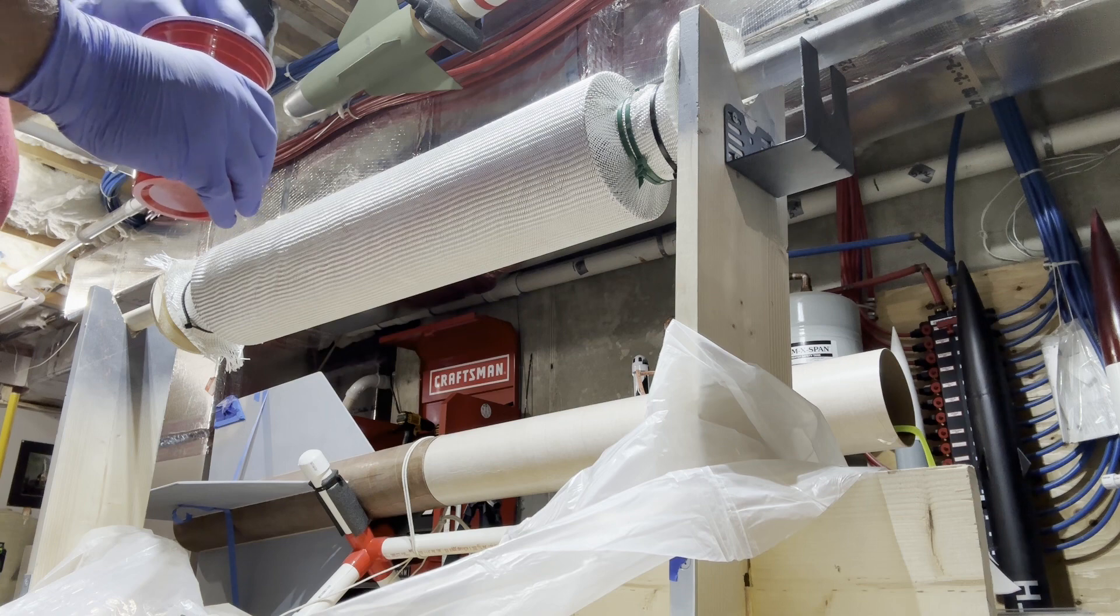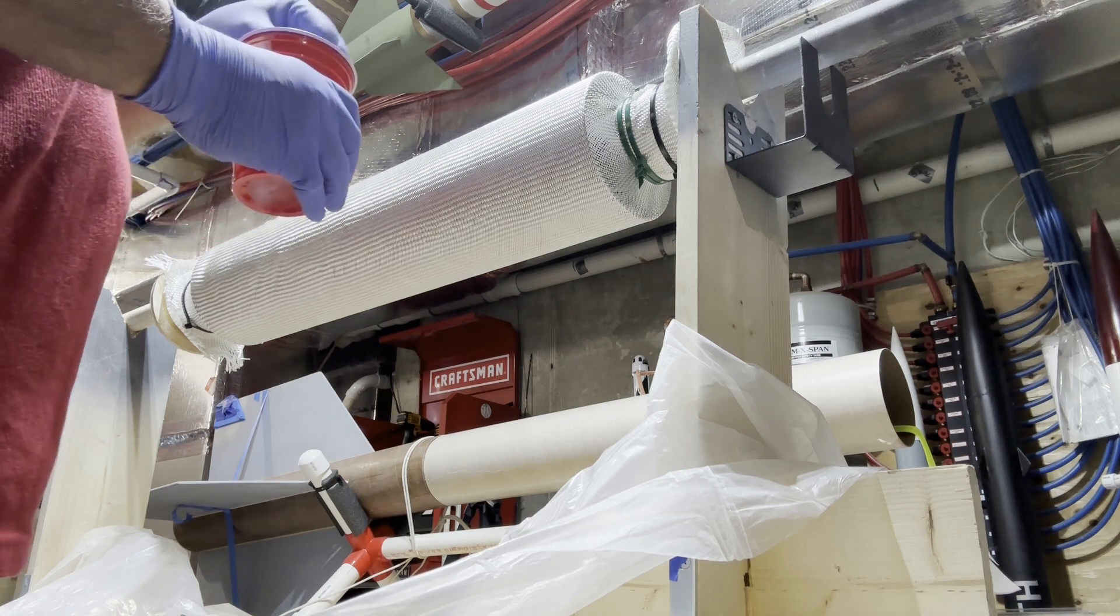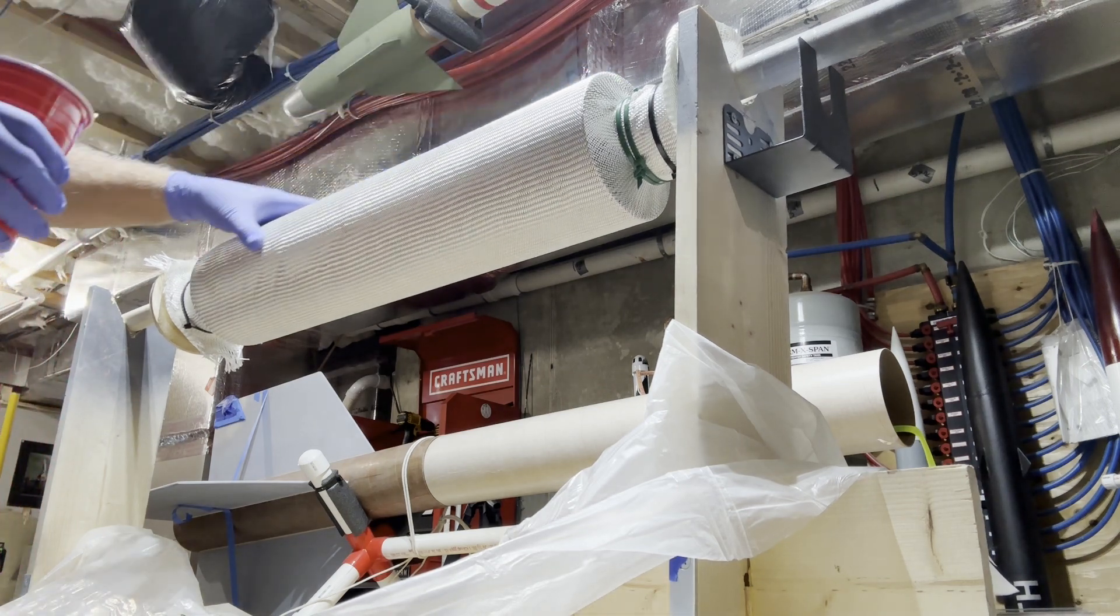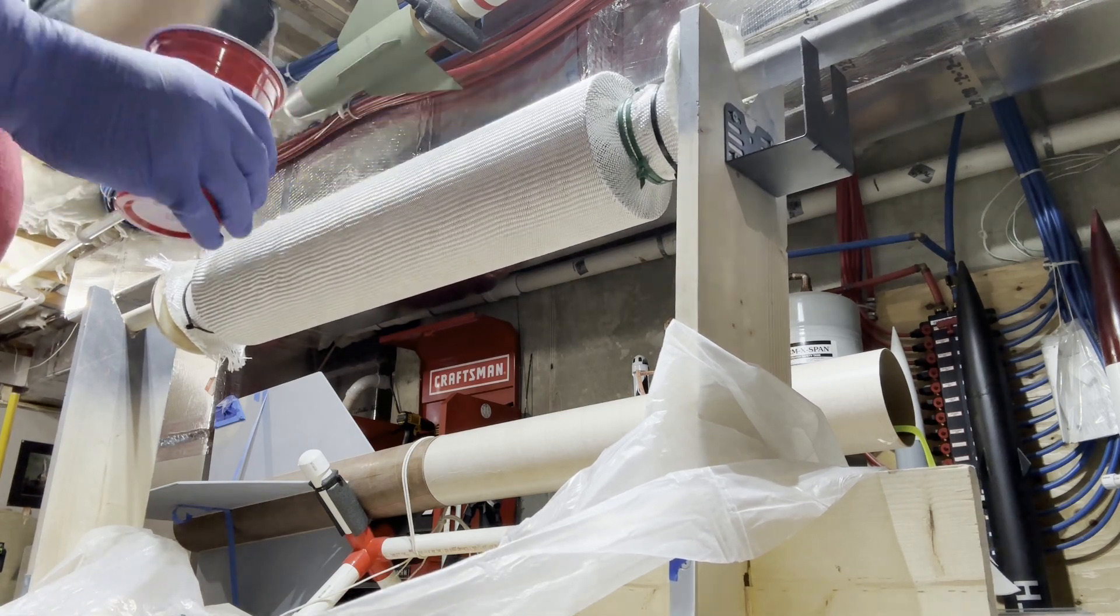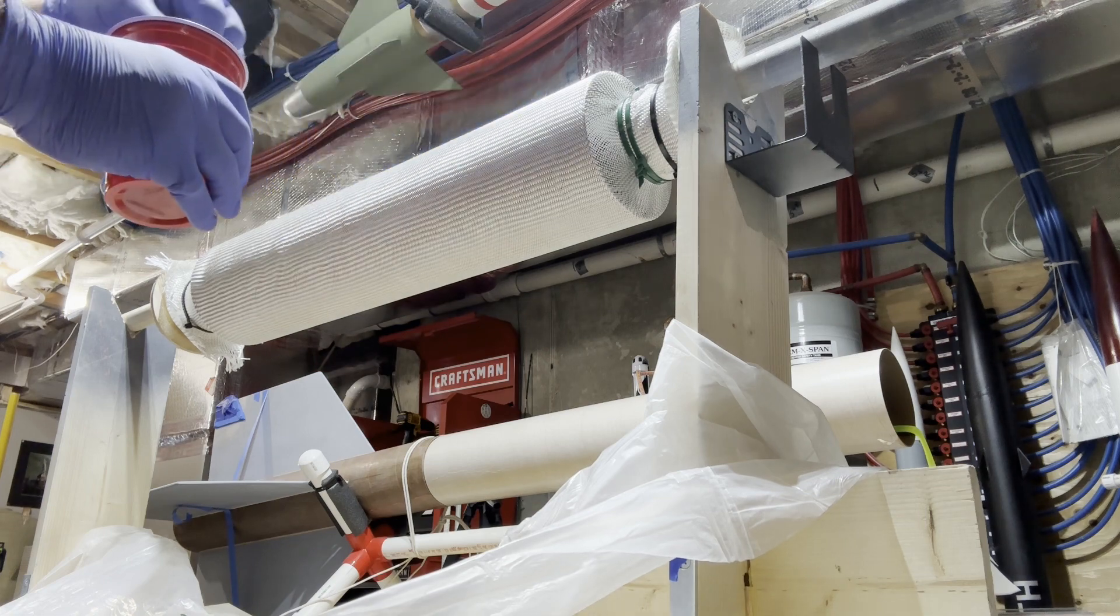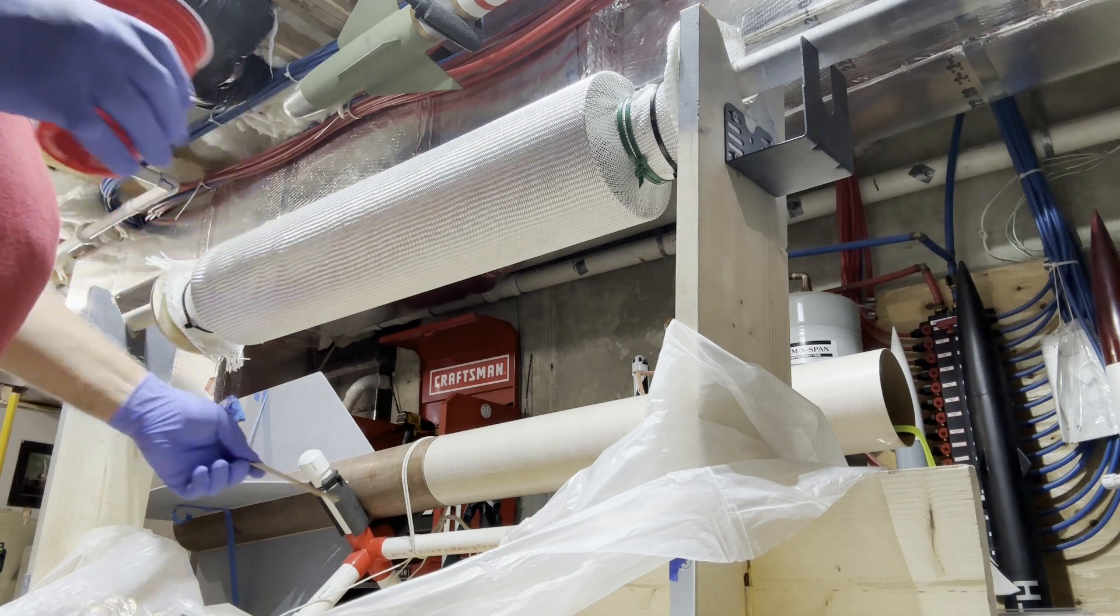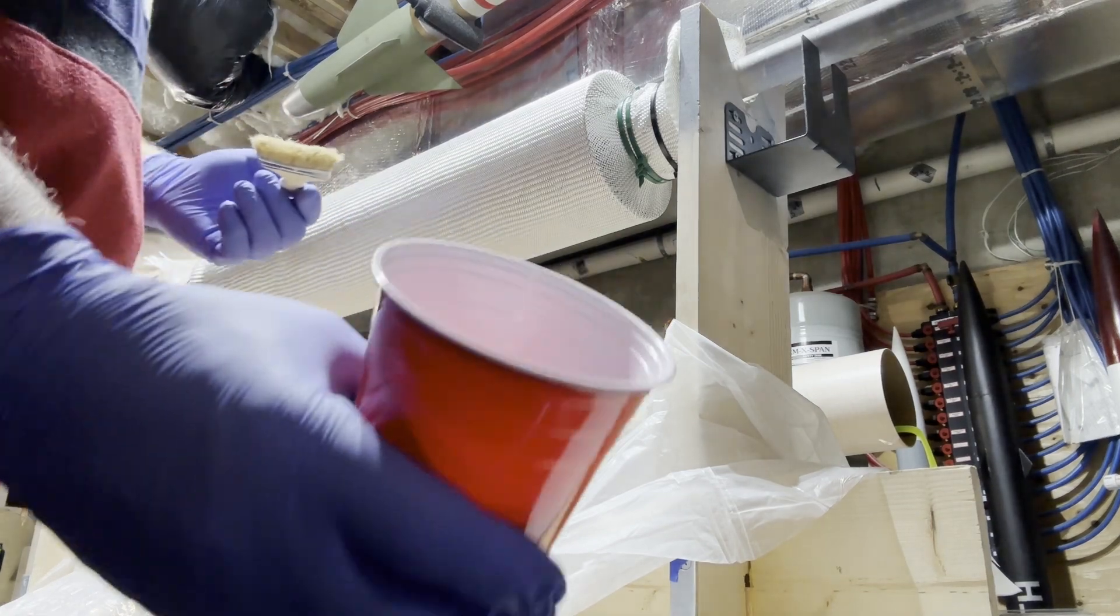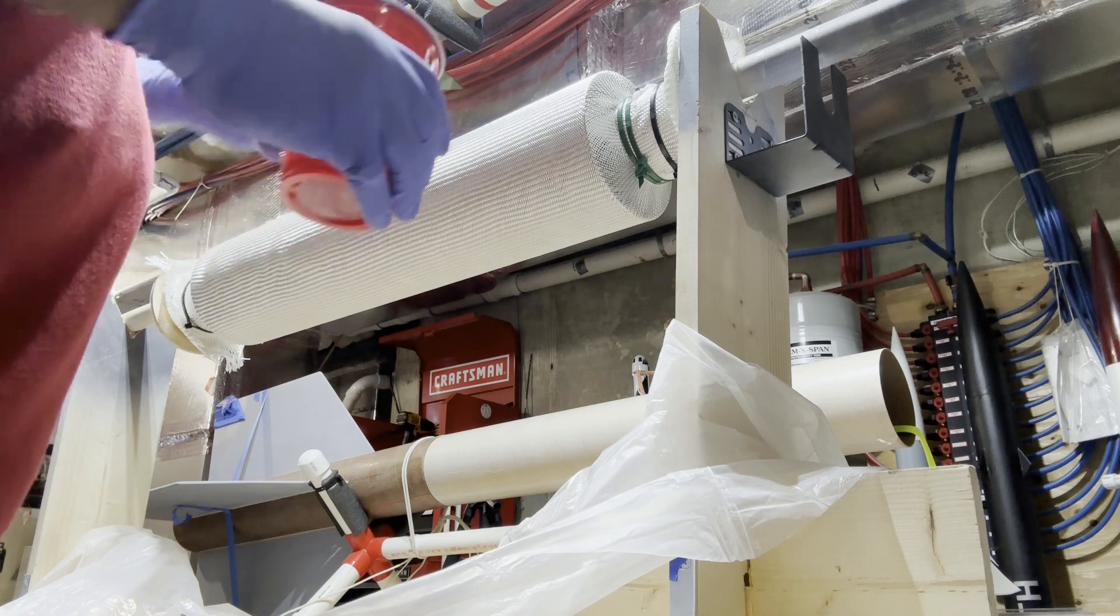I'll speed this up a little bit, but we're going to be using our West System 105 and 207 over this fiberglass that's strapped over this tube and made real tight. So we're going to paint this on, then we're going to put on the plastic and we're going to let it sit overnight. Hopefully we get a nice fiberglass cardboard tube.